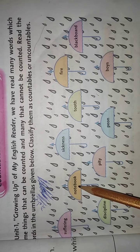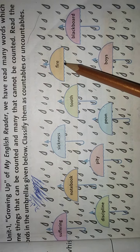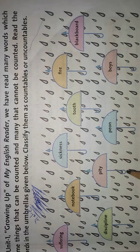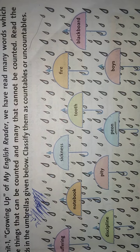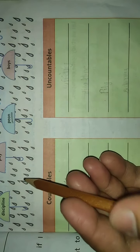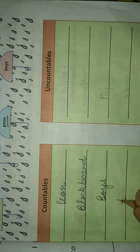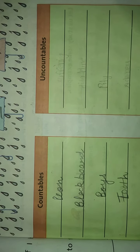The words given are: suffering, notebook, sickness, tooth, fire, blackboard, discipline, pity, pen, boys. Under countable nouns we will write: pen — P-E-O-N — pen, which we can count. Then blackboard — B-L-A-C-K-B-O-A-R-D. The third is boys. The fourth is tooth, and the last one is notebook. These we can count.